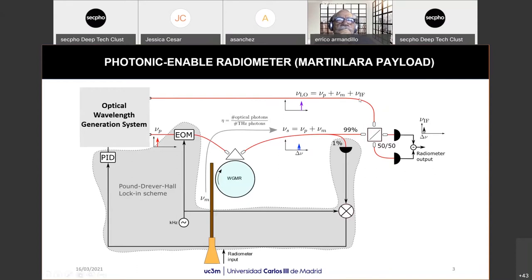The downconversion process happens when this signal goes to a pair of balanced photodiode, where it will be beaten with this local oscillator signal. The local oscillator signal that is also generated by this optical wavelength generation system has a frequency higher than this signal going through the resonator. And the radiometer output will have a frequency that will be the difference between this local oscillator and this 99% signal. That's why we call it IF signal, because they will be beaten in our balanced photodetector. The reason why we are using this balanced photodetector scheme is to make a more efficient use of the energy, as the signal will be added and the noise will be decreased.